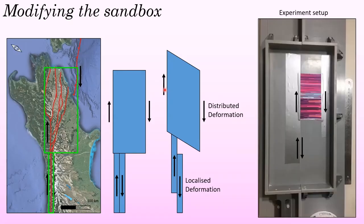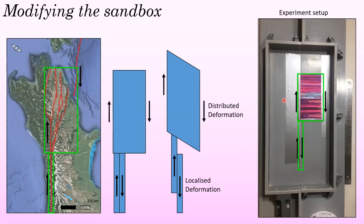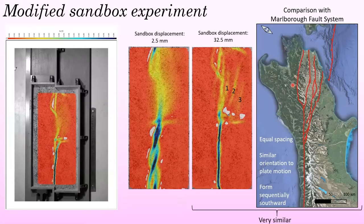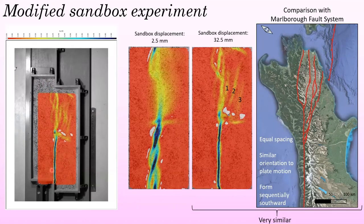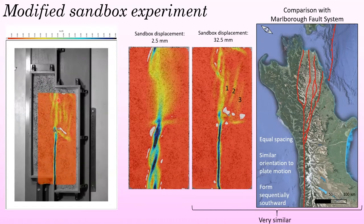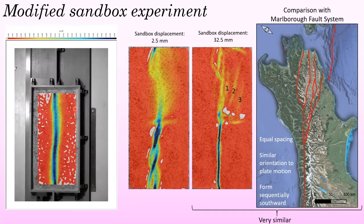In order to recreate these conditions in the sandbox, my solution was to take a piece of stretchable material and tape it to the base slightly over that basement discontinuity — and of course I chose this material to be pink. So now as I run the model, the sand in the box should be deforming over a localized deformation zone here, and by distributed deformation over the stretchy material up here.